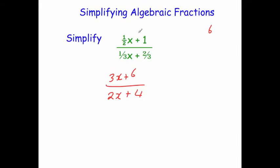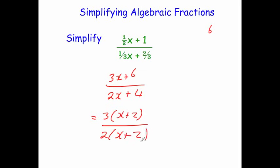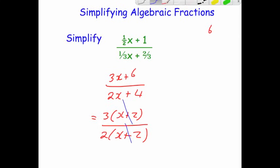This is nicer than what we started with — we now have integer coefficients of x, meaning whole numbers in front of x. Factorising the numerator: take the 3 out to get 3 bracket x plus 2. Factorising the denominator: take the 2 out to get 2 bracket x plus 2. We've got x plus 2 on the top and bottom; cancelling those out leaves 3 over 2, which is the same as 1 and a half.